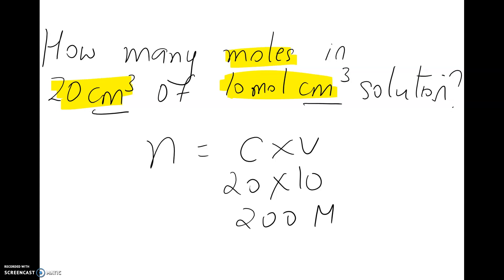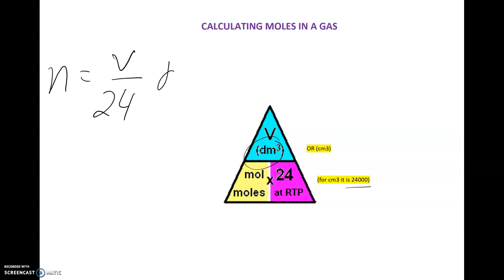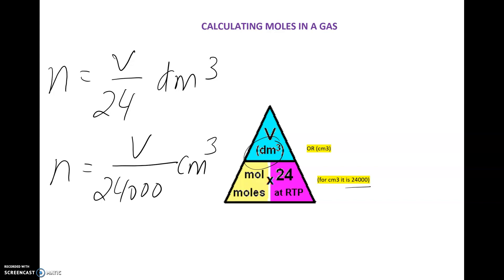Let's now look at how we calculate the same thing in gases. For gases, the formula is: volume equals number of moles times 24 at room temperature and pressure. This is for dm³. If you are working in cm³, then you need to use 24,000. So number of moles equals volume divided by 24 (dm³), or number of moles equals volume divided by 24,000 (cm³), because the ratio is 1 to 1000.